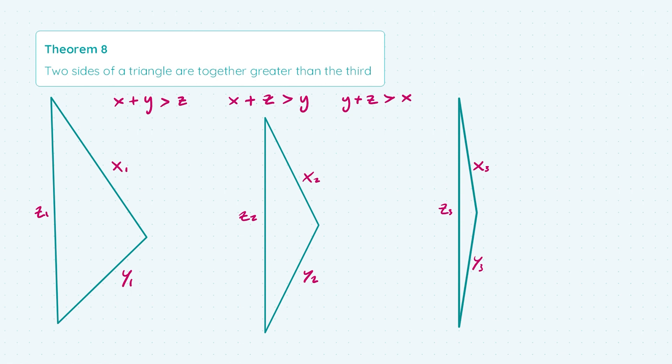But the reason I've drawn the triangles like this is because as we go from left to right here, for the first triangle the value of x plus y is quite a bit more than the value of z, so x1 plus y1 is much greater than z1.